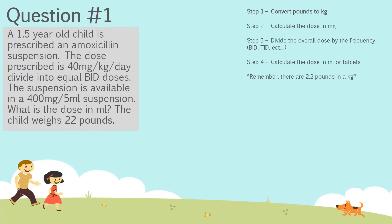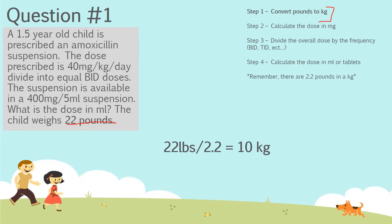Step one is to convert from pounds to kilograms. We divide 22 by 2.2, because there are 2.2 pounds in a kilogram. So now we know the child weighs 10 kilograms — a very easy step.